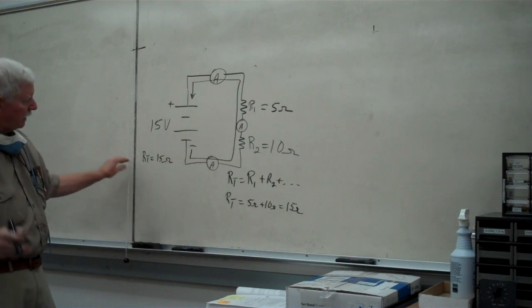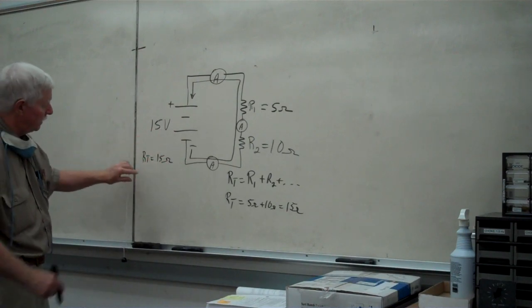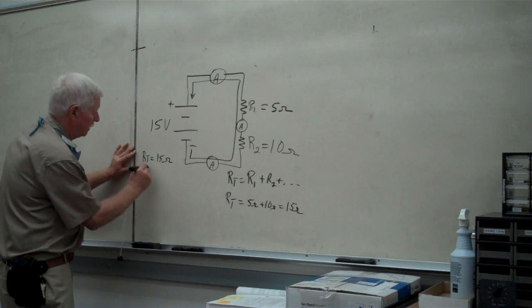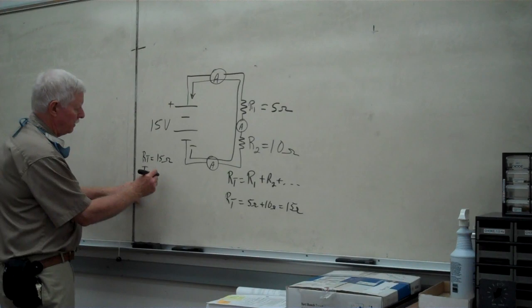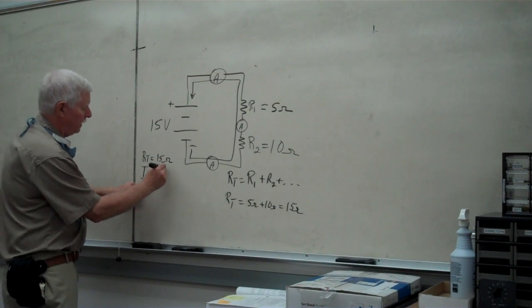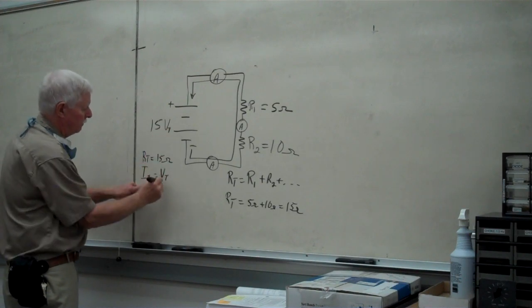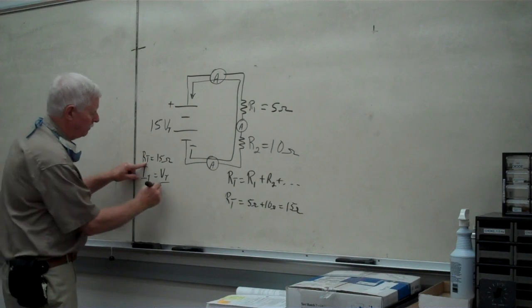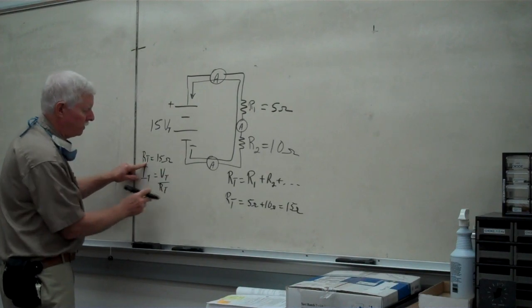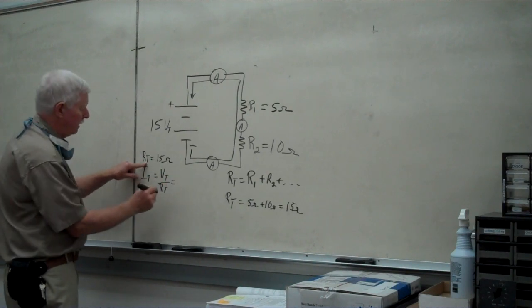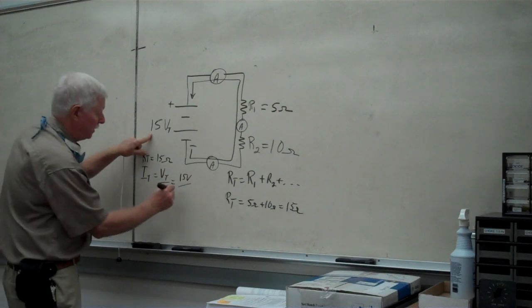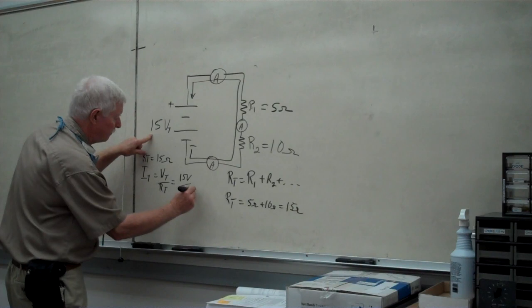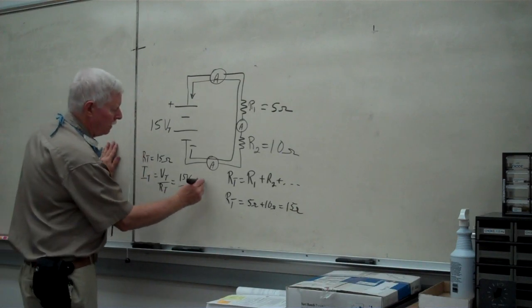And the next thing we need to calculate since we're given the voltage is to calculate the circuit current. So IT, called I sub t, is actually going to be equal to the VT or VS divided by RT, total voltage divided by total resistance. That's going to result in 15 volts divided by 15 ohms, resulting in 1 ampere.